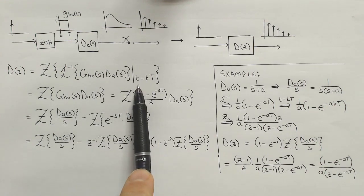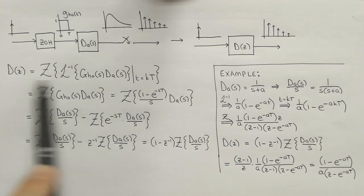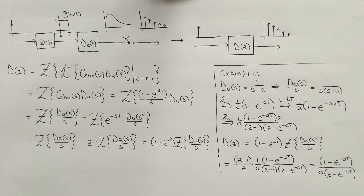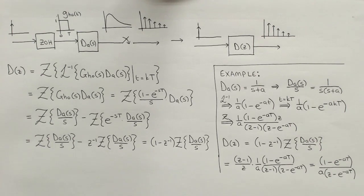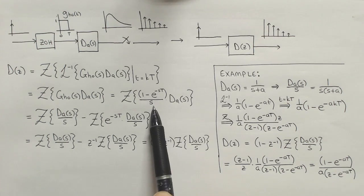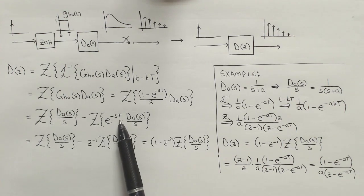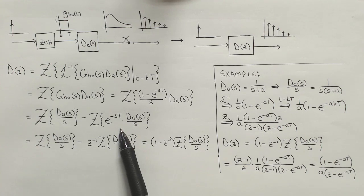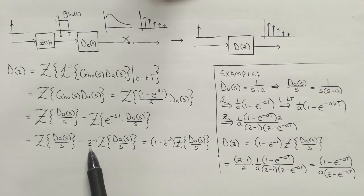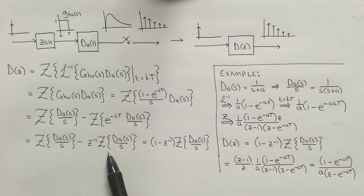We can informally write the same process as the Z-transform of the product of the zero order hold and continuous controller transfer functions. We have previously calculated the zero order hold transfer function as 1 minus e to the minus s T over s, which allows us to separate this expression into two terms. E to the minus s T has the meaning of a delay of one sampling period in the Laplace domain. This translates in the Z-transform to a one time step delay in the Z domain. After combining these two terms again, we get this expression for the step invariant discretization.